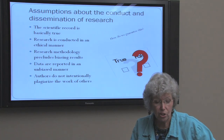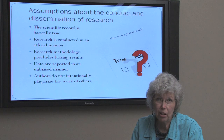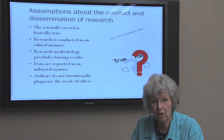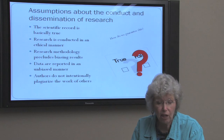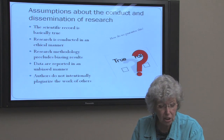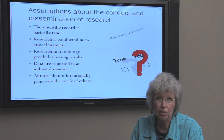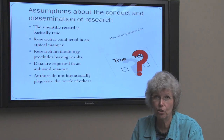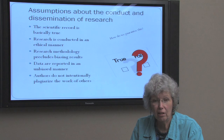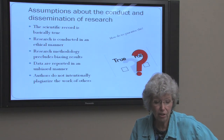I want to discuss briefly some of the assumptions that we have about the conduct and dissemination of research. We basically read articles that other people have written because we believe they're true. We think that research is conducted in an ethical manner, and that the data are reported in an unbiased fashion, and that authors do not intentionally plagiarize the work of others. Unfortunately, these assumptions aren't always true. But we want to preserve the integrity of the scientific record, so we want our students and professionals to learn how to write appropriately for scholarly publication.